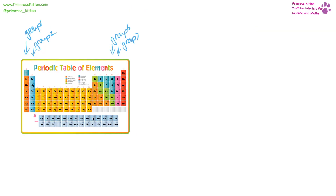The periodic table gives us loads of information. Groups go down the periodic table — group one, two, three, four, five, six, seven, eight — and tell us the number of electrons on the outer shell. Things in group one have one electron on the outer shell; group two have two; group six have six; group seven have seven. Periods go across the periodic table. The first period has hydrogen and helium. The second period has eight elements, and so on. Periods relate to the number of shells and also tell us how many electrons are in each shell.